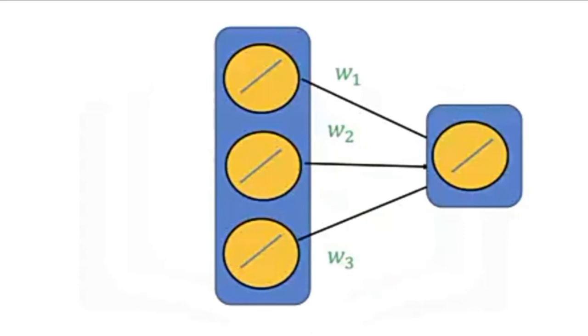Each neuron is like a linear classifier, therefore each neuron must have the same number of inputs as the previous layer. In this case the previous layer has three neurons, so this neuron has three inputs.